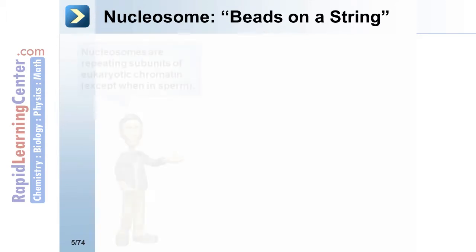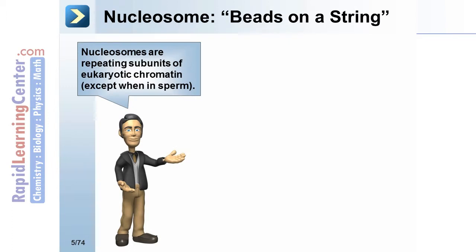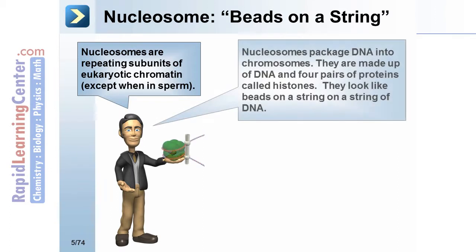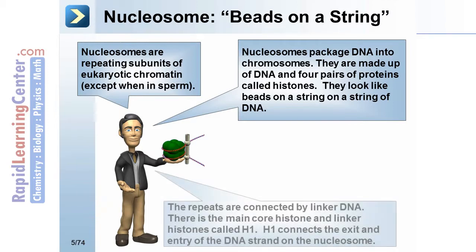Nucleosomes — beads on a string: nucleosomes are repeating subunits of eukaryotic chromatin, except in sperm. They package DNA into chromosomes and are made up of DNA and four pairs of proteins called histones, looking like beads on a string of DNA. The repeats are connected by linker DNA. There is the main core histone and linker histones called H1, which contacts the exit and entry of the DNA strand on the nucleosome.